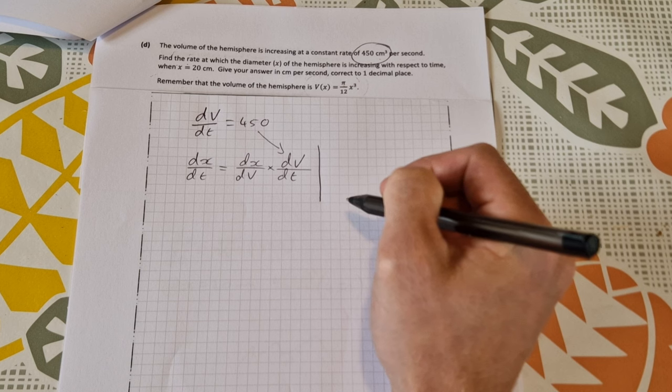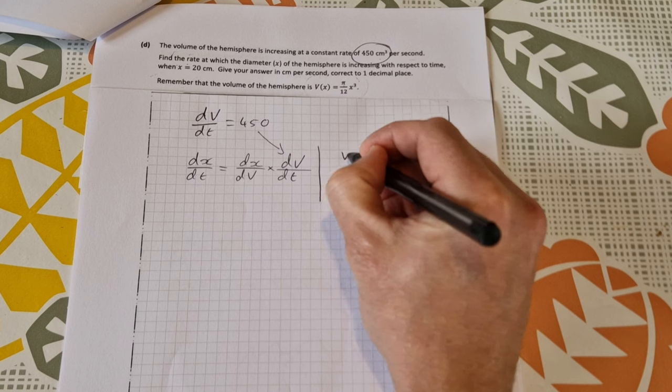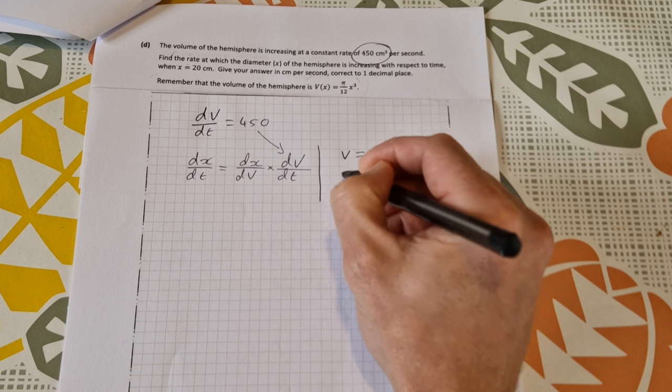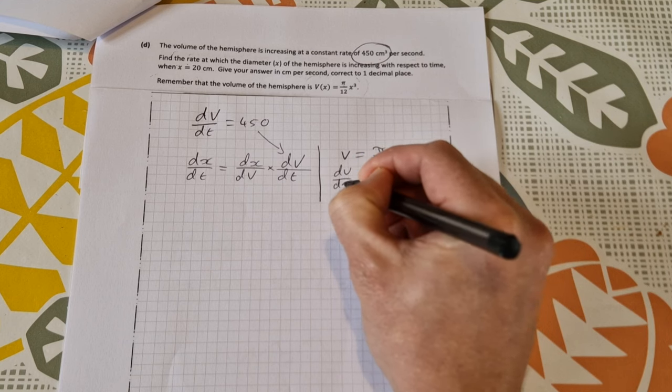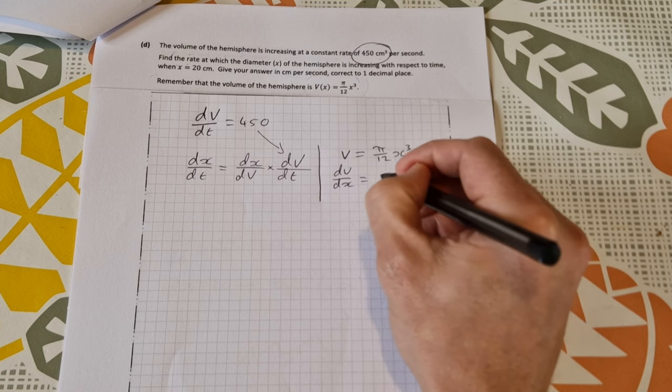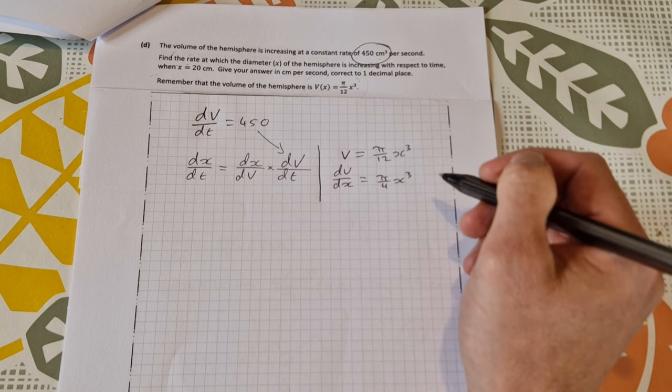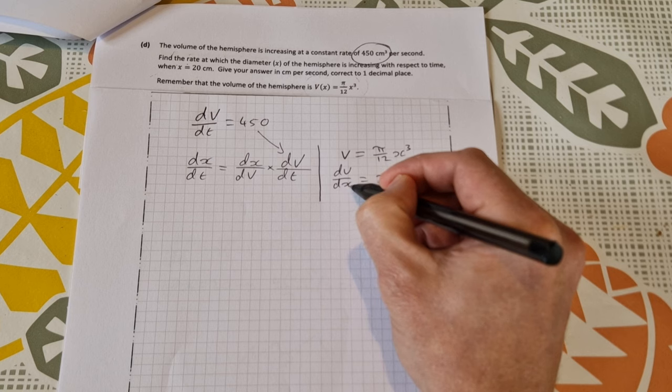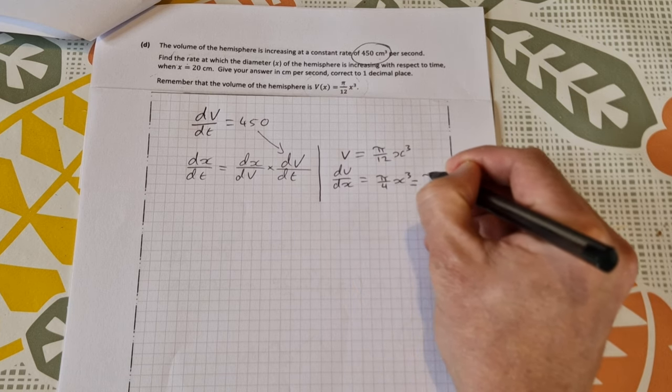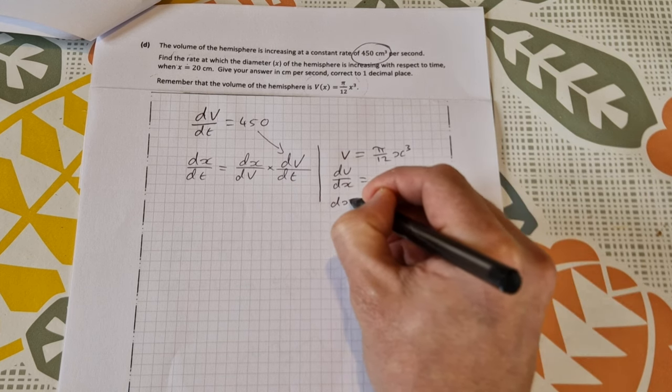So dx dv, do we have anything that relates v and x? We do. We have v of x is equal to this. So v is equal to pi over 12 x cubed. If we differentiate that, we get dv dx is equal to 3 multiplied by pi over 12 is pi over 4. So that's pi over 4 x squared. Now we're looking for dx dv. We have dv dx. We need to invert this. So I'm just going to rewrite it carefully as pi x squared over 4. Because when I invert that to get dx dv, I get 4 over pi x squared.